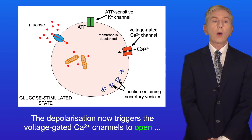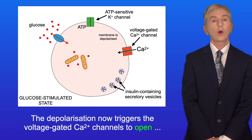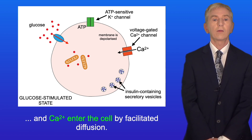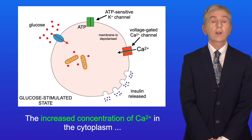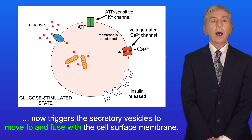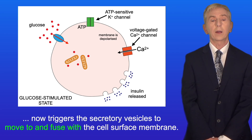The depolarization now triggers the voltage-gated calcium ion channels to open, and calcium ions enter the cell by facilitated diffusion. The increased concentration of calcium ions in the cytoplasm now triggers the secretory vesicles to move to and fuse with the cell surface membrane.